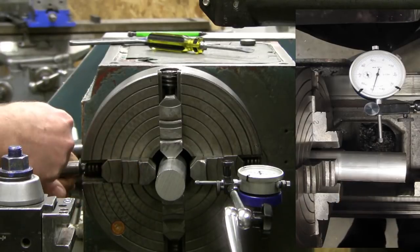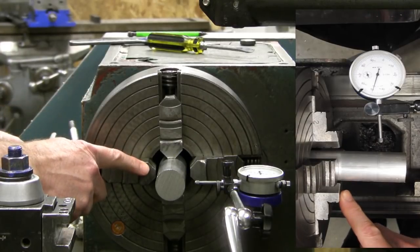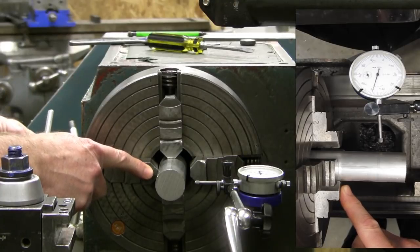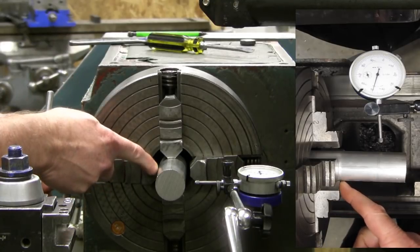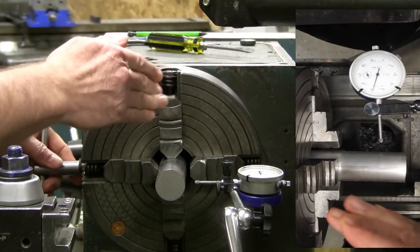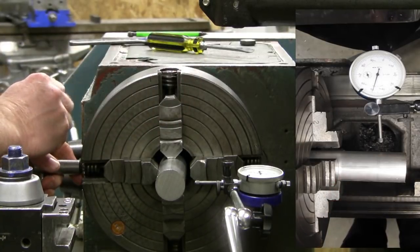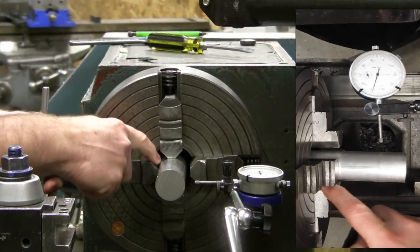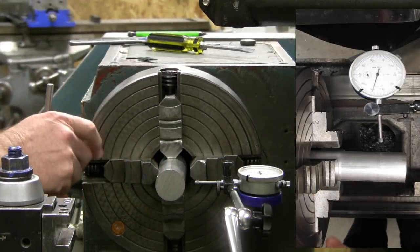Now what I'll do is come in on this side and come up until this jaw just barely touches the part. It could be that it touches in front first or in back first and then the part will swivel around. But as soon as it swivels true so that we have good contact all the way along this chuck jaw, then I will stop.